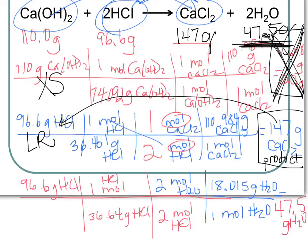So now we know: HCl is limiting, calcium hydroxide is excess, 147 grams of calcium chloride forms, and 47.5 grams of water forms. Now we figure out how many grams of excess remain — how much of that 110 grams of calcium hydroxide is left over after using up all 96.6 grams of HCl.